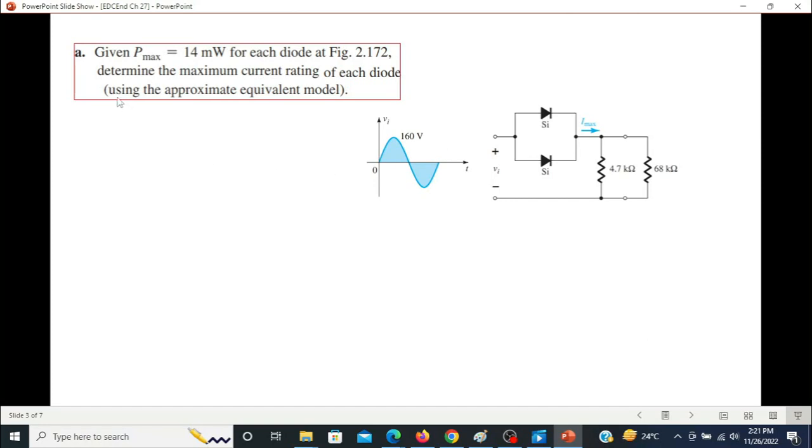It is saying use the approximate equivalent model. Now the approximate equivalent model is that we replace the diodes with the help of a battery. Since these two diodes will become forward biased during the positive half, we can replace them with the battery as shown here.